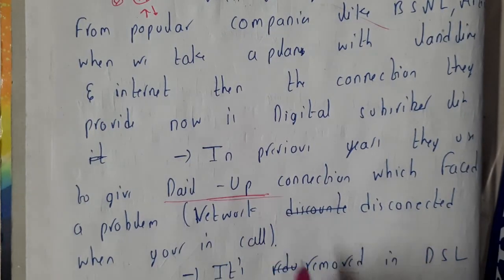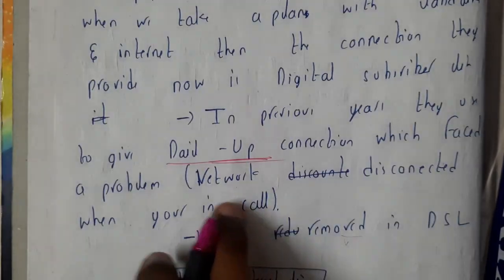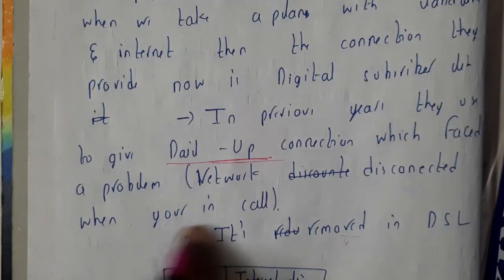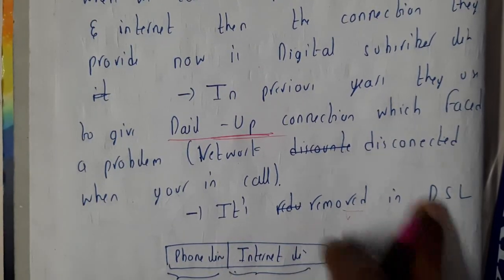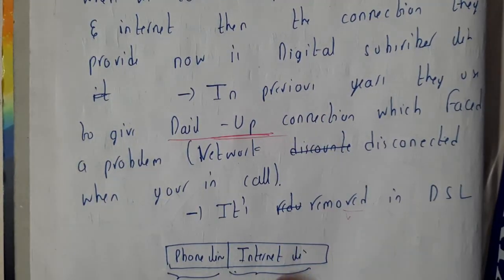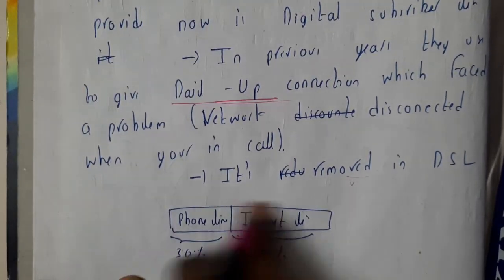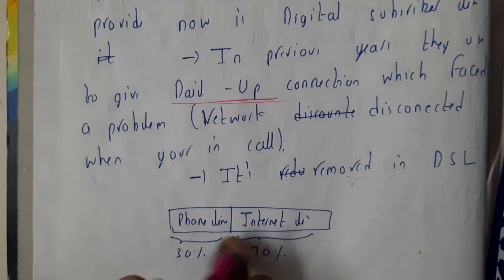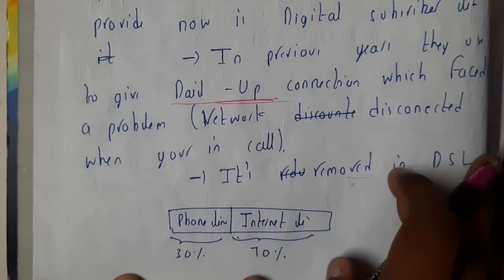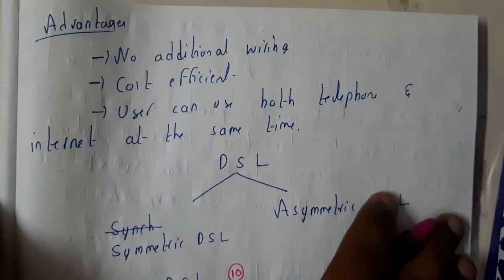In the previous years they used to give dial-up connection, which had the problem that the network disconnected when you were on a call. This is removed by DSL. In DSL, the cable or line is divided: 30% for the phone line and 70% for the internet.